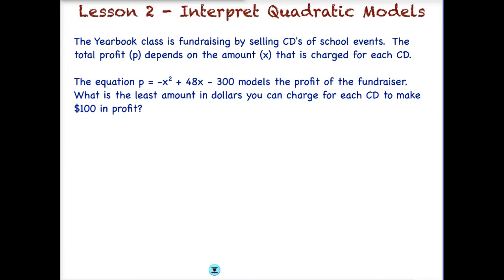Let's take our first problem. The yearbook class is fundraising and they are selling CDs of school events. So their total profit is going to depend on the amount that is charged for each CD. Now remember that when we make our equation, we are saying that profit is a combination of the money we bring in, but the cost that we incur per CD. So the equation listed here is P equals negative x squared plus 48x minus 300. And that models the profit of this fundraiser.